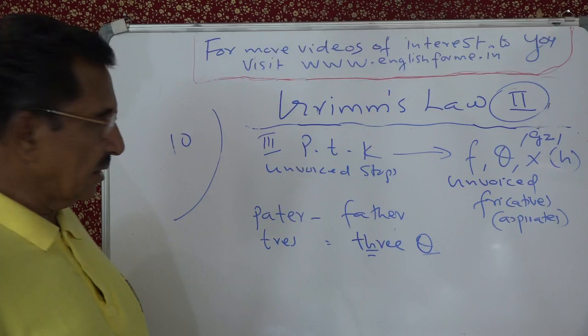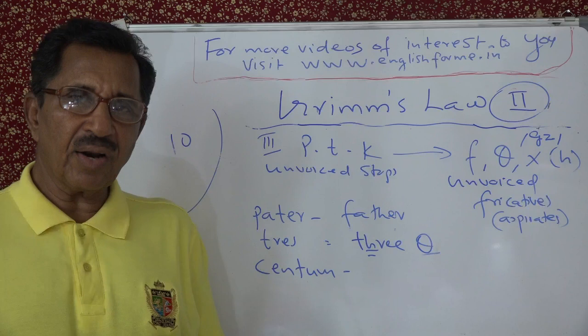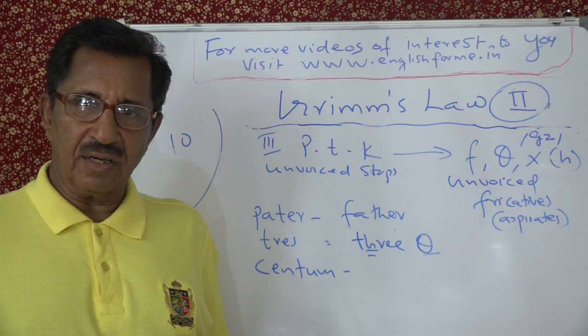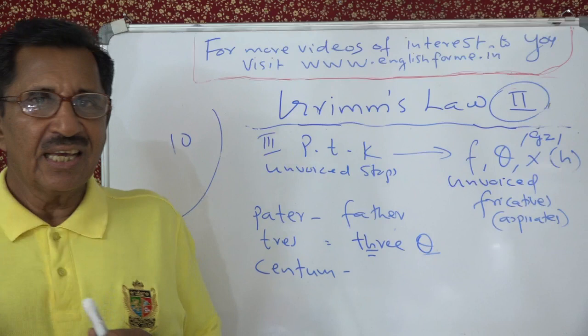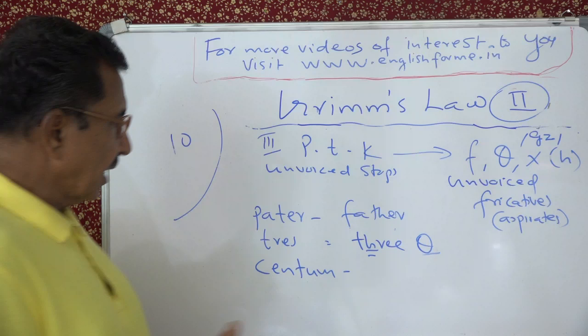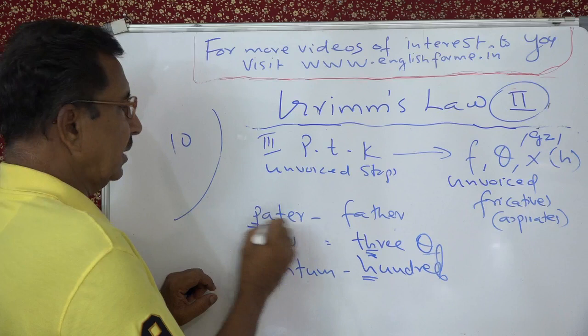The next example is Latin 'centum', which means hundred. From this we get 'centenary' and 'centurion' — a Roman officer in charge of a hundred soldiers. So the K in 'centum' has become H in English 'hundred'. We can see: H here, K here; T here, K there; P here, P and F here — this is the third set of correspondences.